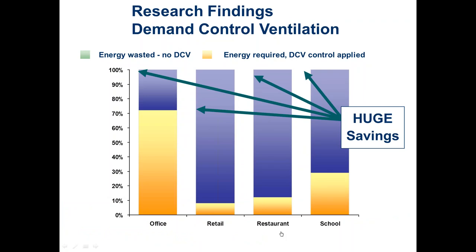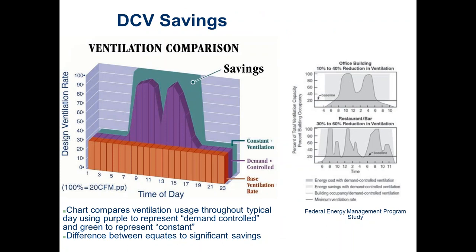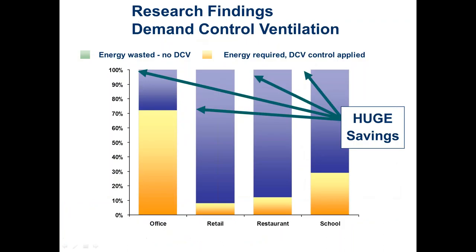Typical averages for energy savings: an office building saves about 30% of ventilation energy by adding DCV — basically 30% of the time the building isn't fully occupied. Retail shows massive savings of about 90%, because those spaces are sized for peak events like Black Friday but are mostly lightly occupied. Restaurants similarly show about 90% savings potential, since they're designed for Saturday night dinner crowds but are lightly populated Tuesday morning.